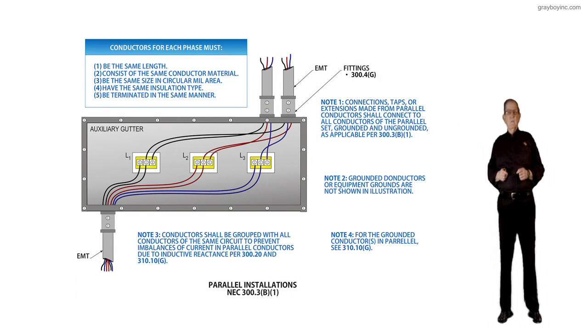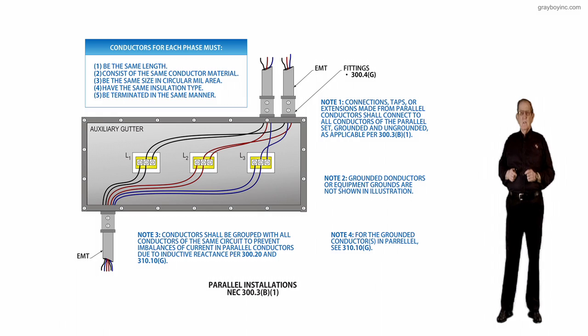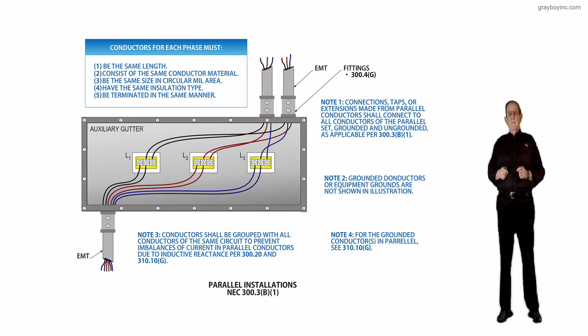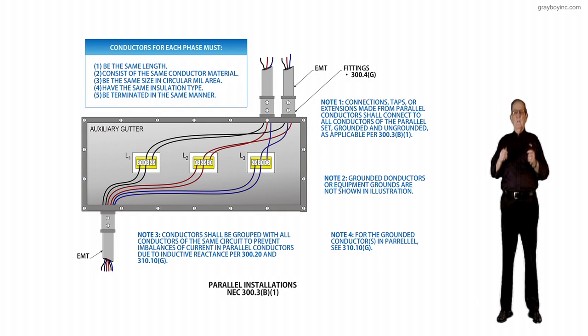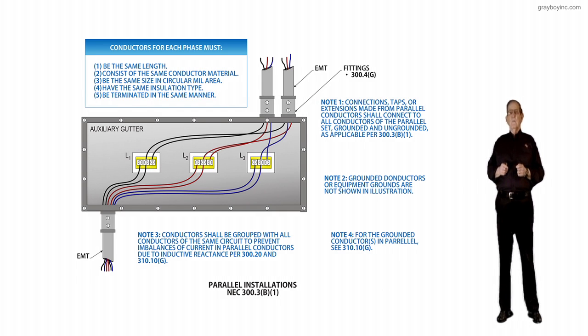This new section deals with parallel installations in accordance with NEC 300.3B1. The purpose of change was a new sentence that has been added to require that connections for a parallel set of conductors include all of the conductors of the set, and not just one of the conductors in parallel, as has been done in the past.